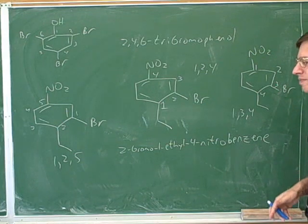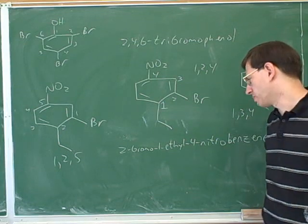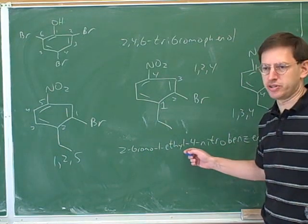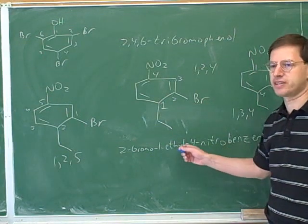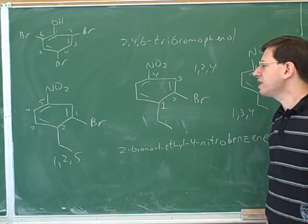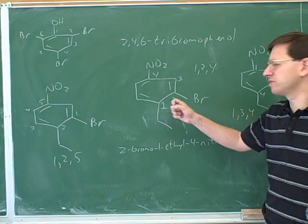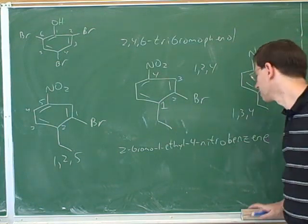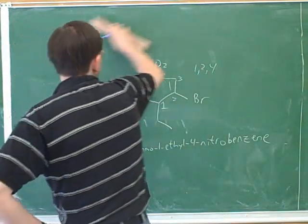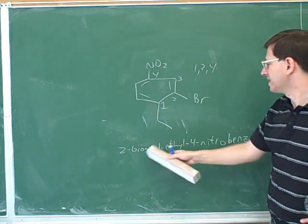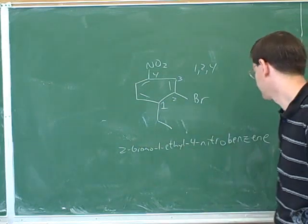That is a nuance that's hard for people to come to grips with. There's one thing that we always use alphabetical order for: we always use alphabetical order to determine what order to list the substituents — the order to list the prefixes. However, we rarely use alphabetical order to determine the numbering itself, because usually we can just choose the numbering that gives us the lowest possible set of numbers. Even though the ethyl got number one, it doesn't come listed first.